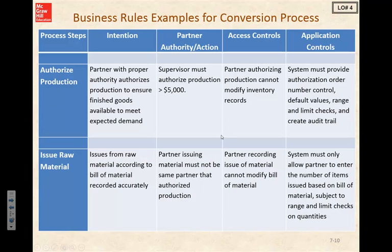Let's take a look at our business rules example for the conversion process, starting with authorizing production. Our intention is that the partner with proper authority authorizes production to ensure finished goods available meet expected demand. Authority rules: supervisors must authorize production of greater than 5,000. Our access controls limit who can use and change records in the system — the partner authorizing production cannot modify the inventory records. Our application control ensures data integrity: the system must provide an authorization order number, with default values, range, and limit checks.